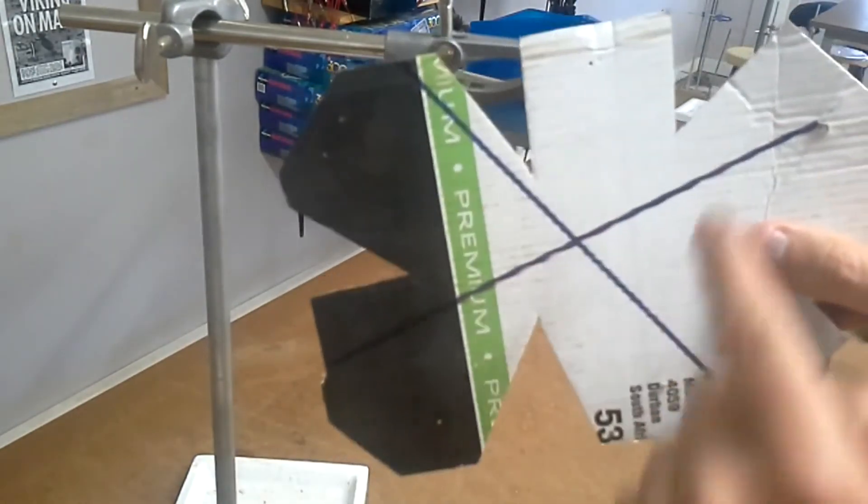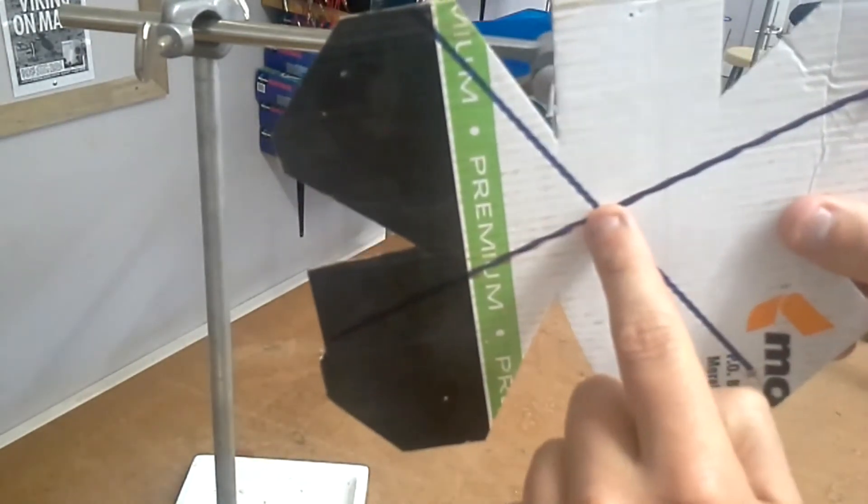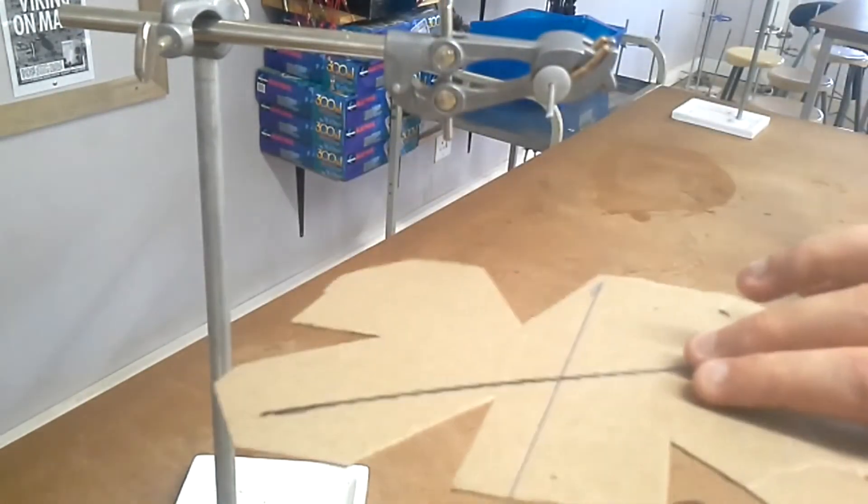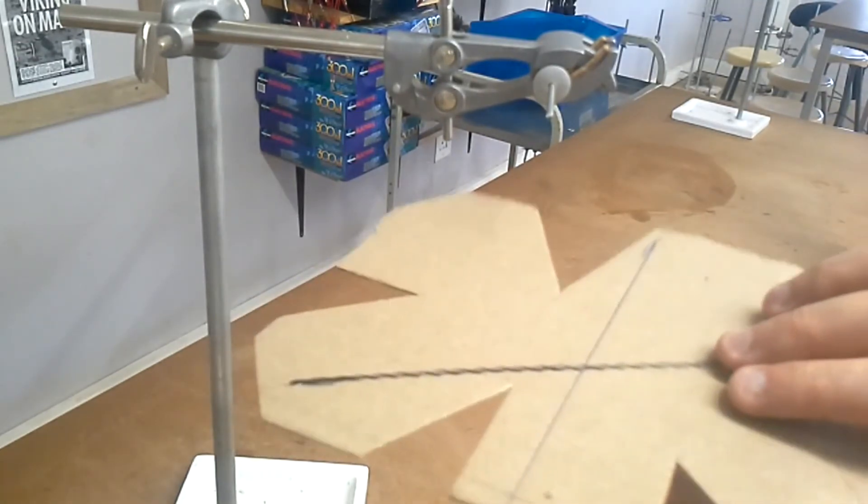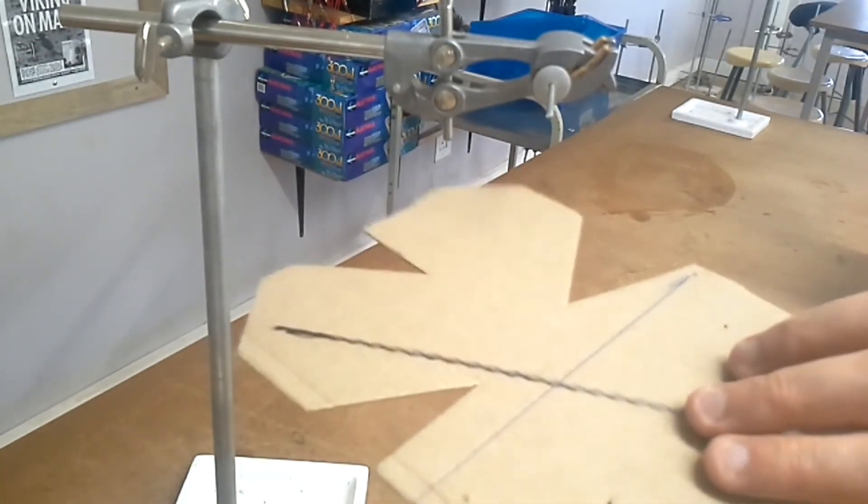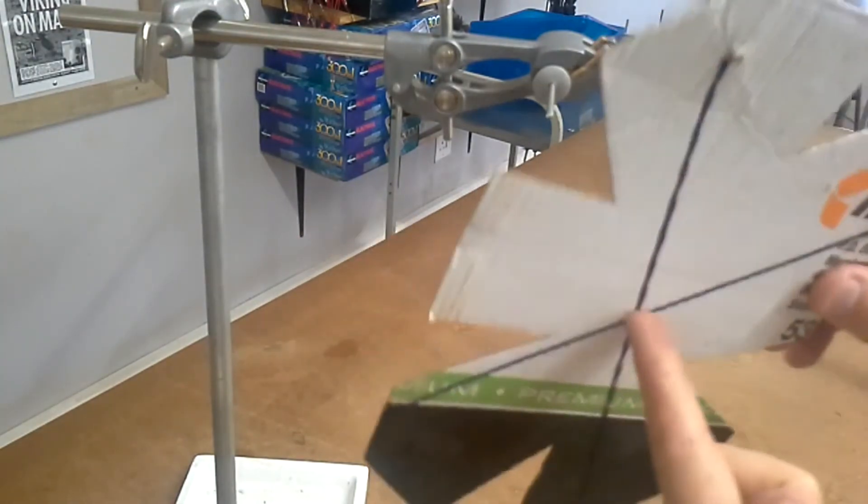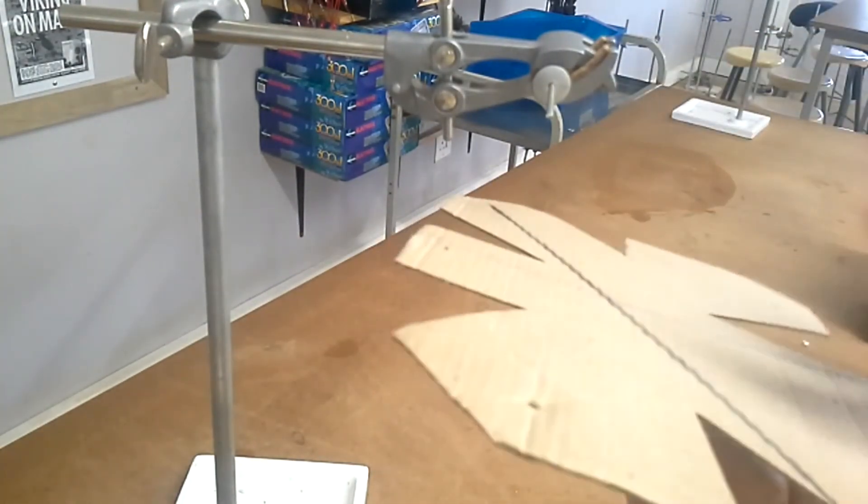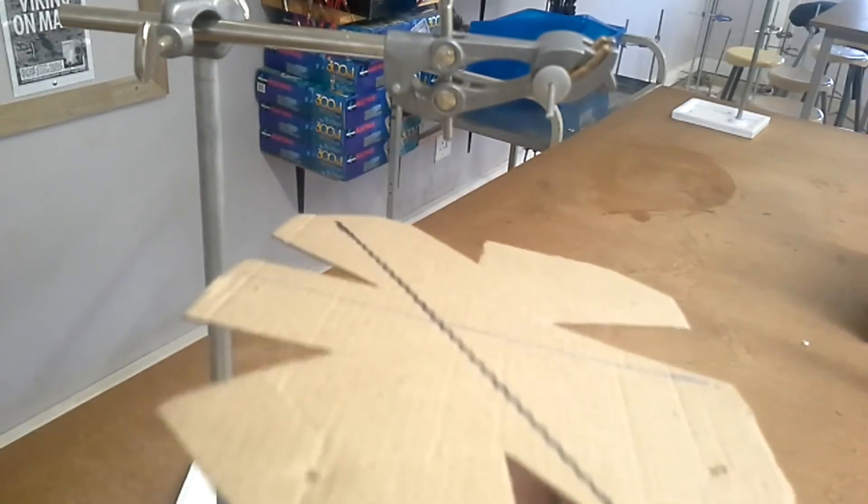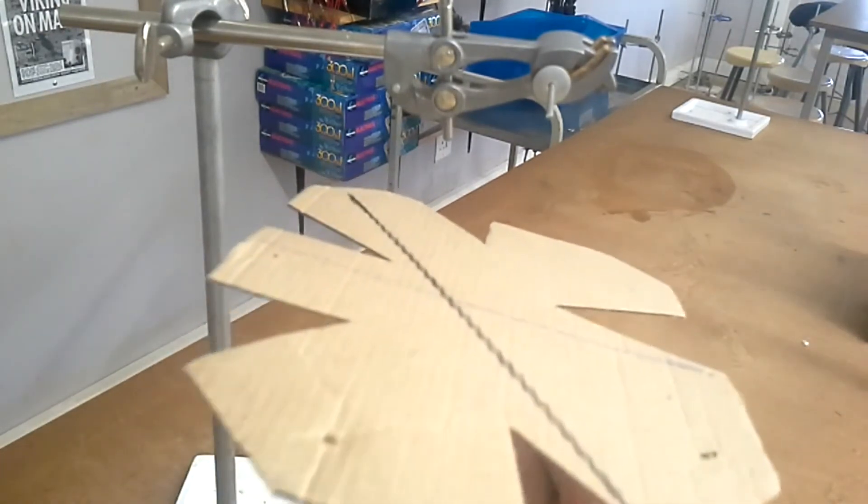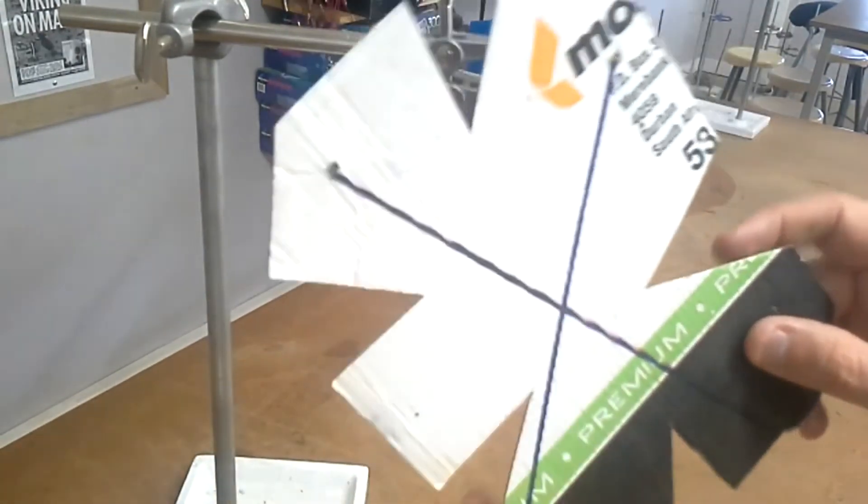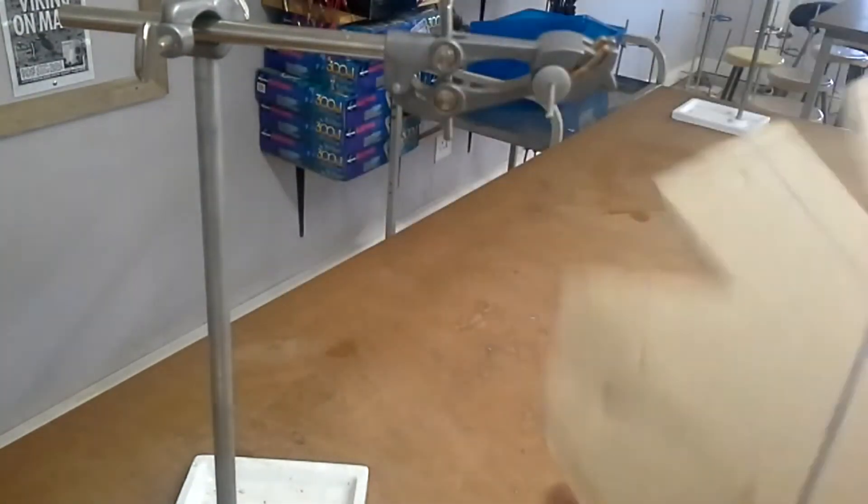Now where those two lines intersect, that there is your center of mass. And if I hold it like this, well it should just about balance on that point there. So that's how you find the center of mass of a thin lamina. Bye for now.